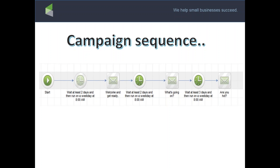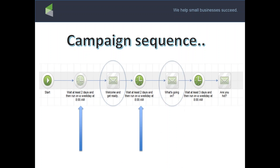This is a campaign sequence. A campaign has a start at the beginning — two days after a person joins, they get the welcome email. Two days after that they get the 'what's going on' email. Then three days after that comes the 'are you hot' email. It's automated follow-up going out at two days, two days, then three days, and we'll learn about that tomorrow.